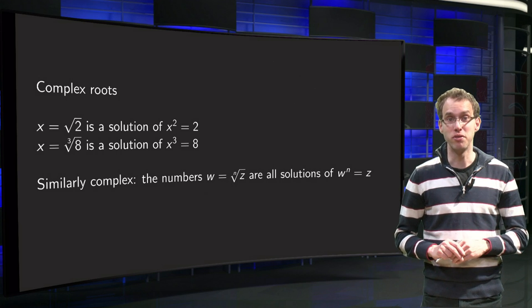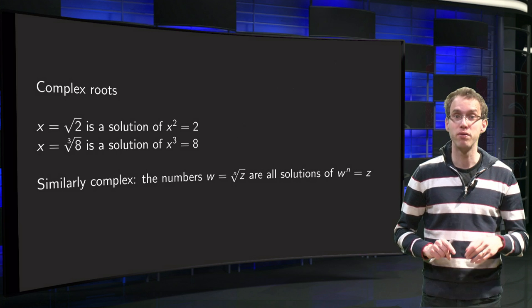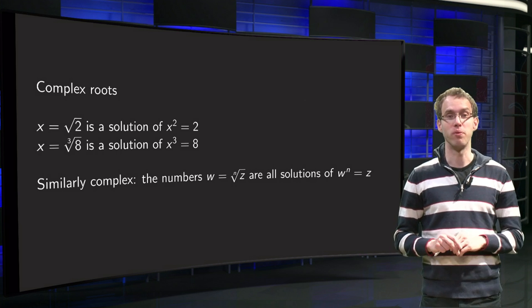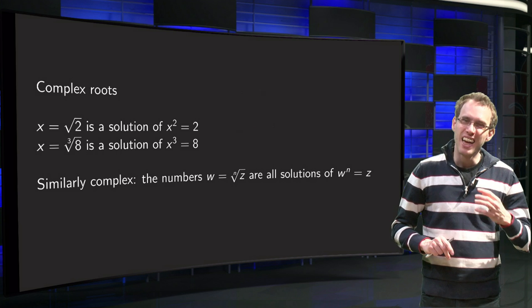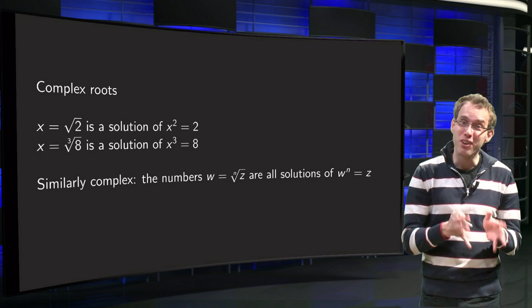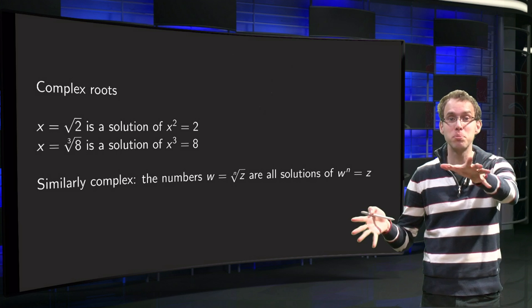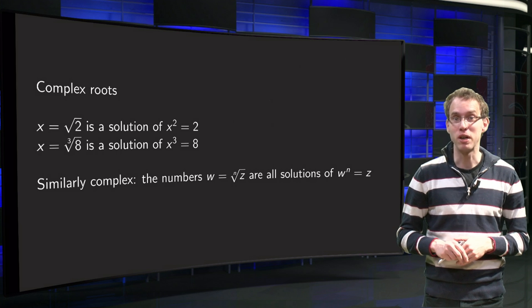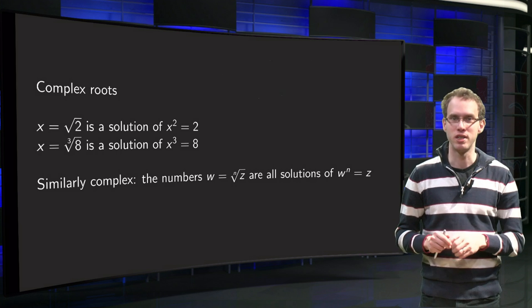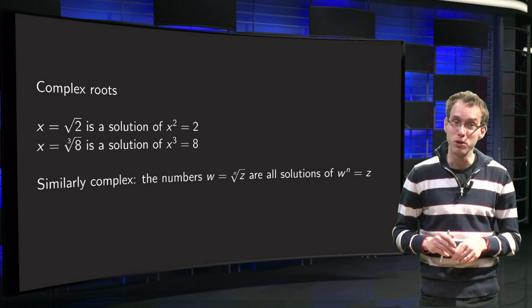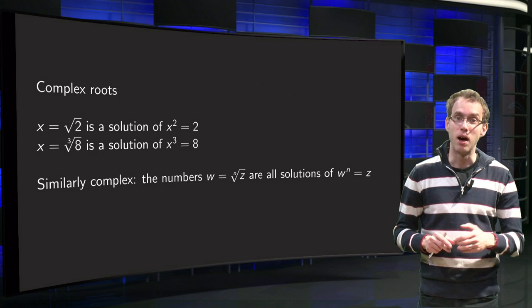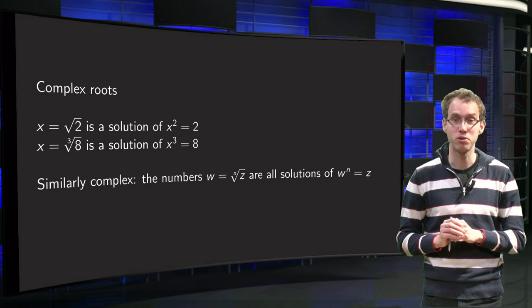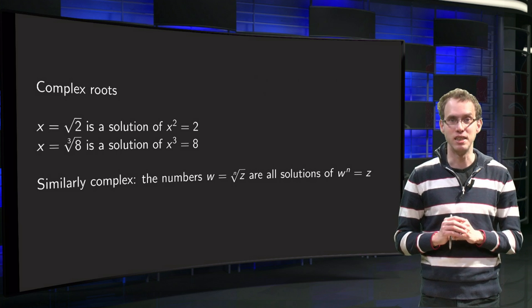In the real functions you have seen up to now, one real value is always mapped to one image, not to more than one image. If you have complex functions though, one value in the domain can be mapped to multiple values in the codomain, which makes some complex functions quite tricky. Roots exhibit this multivaluedness, and apart from that, complex roots behave exactly the same as their real counterparts, as we will learn in this video.